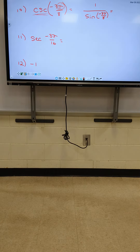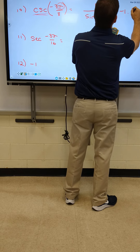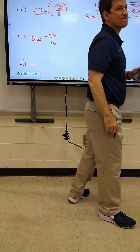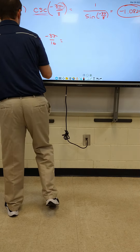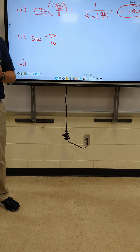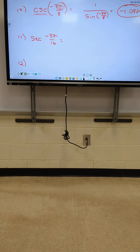1 over sine of negative 3pi over 8. I've got negative 1.0824. Anybody else get that? Make sure you put parentheses, or you'll get something like negative 48. Did you type cosine instead of sine? Make sure it's sine. Alright, let's go to number 11.